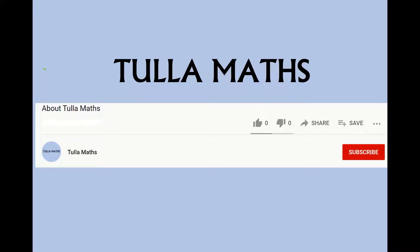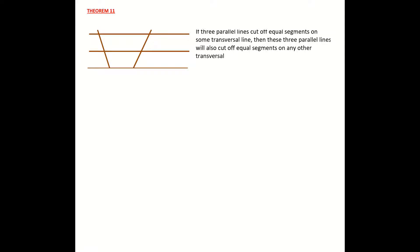Welcome to another tutorial video from Tullamats. Make sure and subscribe for more. This is the proof to theorem 11 on our Leaving Cert Honours course, which states: if three parallel lines cut off equal segments on some transversal line, then these three parallel lines will also cut off equal segments on any other transversal. A transversal is a line which has been cut by those parallel lines — the purple line drawn is our transversal, and there is another transversal here as well.